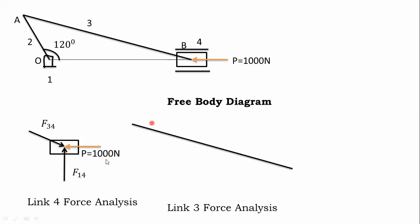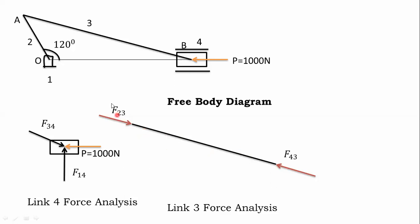Link four force analysis is complete. Link four has three forces: the applied force, force from link one (F14), and force from link three (F34). Now construct the free body diagram of link three. Link three is 900 mm, which means 9 centimeter length. Link three has two forces: one coming from link two (F23), and another coming from link four (F43).